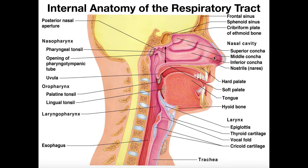When you inhale air through your nose, that air goes through the nasopharynx and then downwards. If you inhale air through your mouth, it bypasses the nasopharynx and goes directly to the oropharynx and then downwards. Regardless of where air is entering your body, from the oropharynx it will descend into the laryngopharynx, which is named that way because it lies adjacent to the larynx.